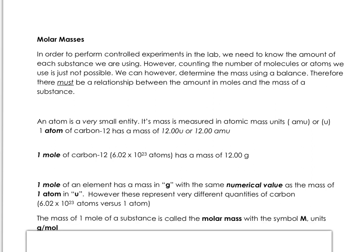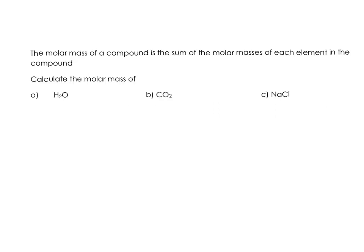The mass of one mole of a substance is called the molar mass, and it has a symbol, big M, capital M, and the units are grams per mole. The molar mass of a compound is the sum of the molar masses of each of the elements in the compound. You can find these masses on the periodic table, and they are usually underneath the atomic symbol.